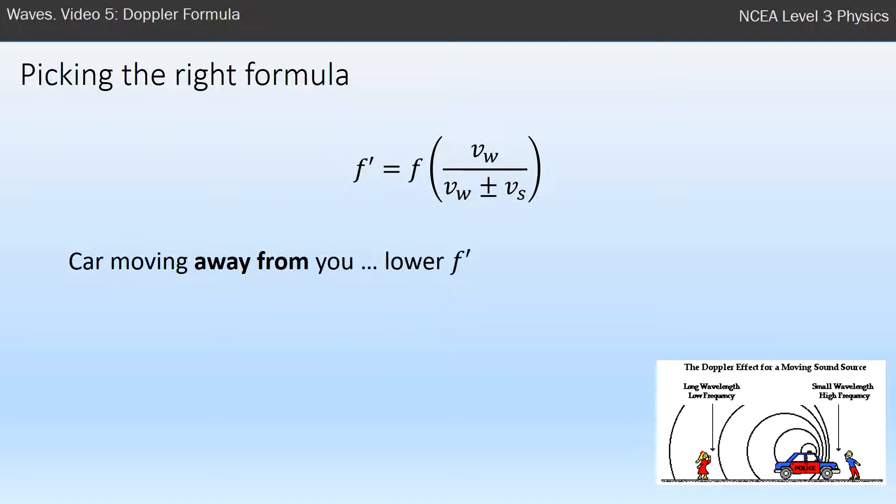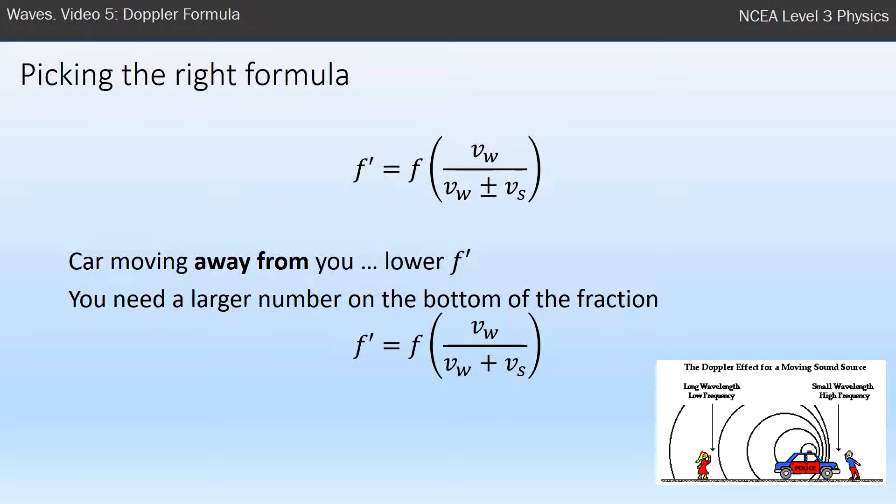What if the car is moving away from you, such as the girl with the red dress? Then you need to know that it has a lower frequency. To get a lower frequency we need to divide by a large number, and then to get the large number on the bottom of the fraction we're going to use plus. So that process is something that you need to know how to do yourself.